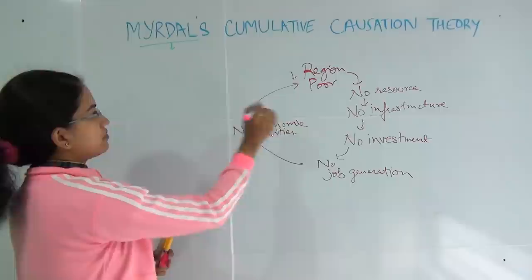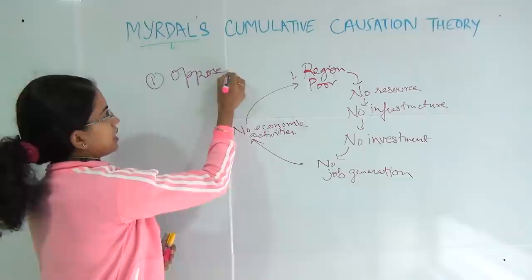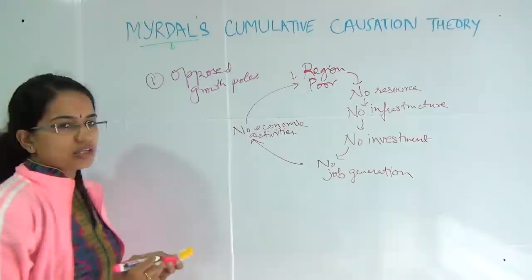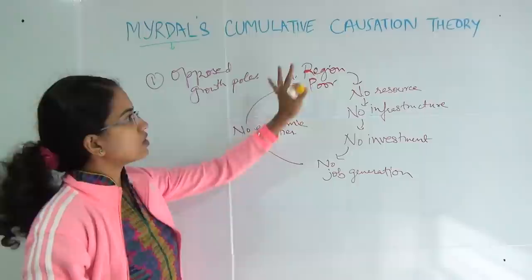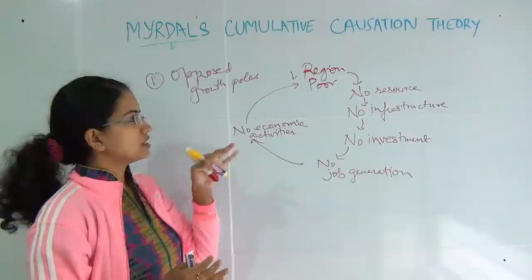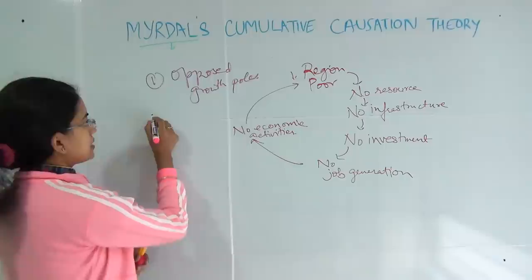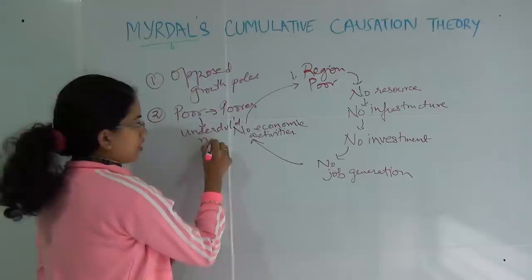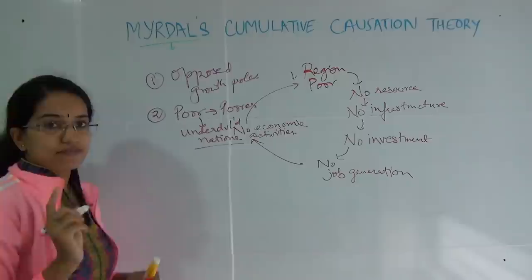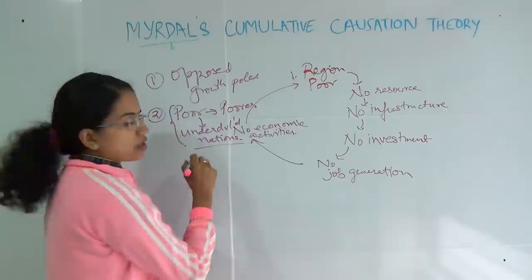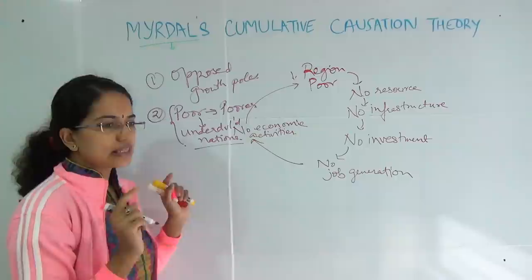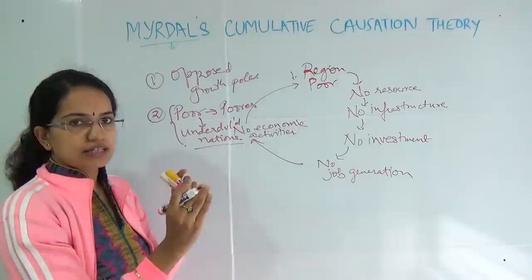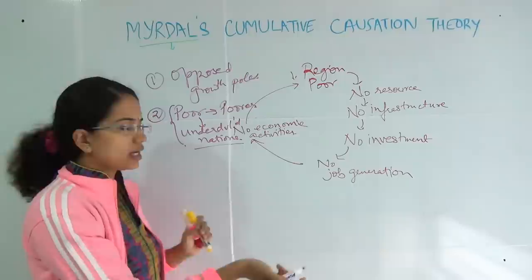Myrdal opposed the growth pole concept. His theory focused on two things — the backwash effect and the spread effect — and based on that, he gave the concept of cumulative causation: that the region which is rich gets more and more rich, and the region which is poor gets more and more poor. He also said the poor region tends to go poorer at a much faster pace in an underdeveloped or developing nation as compared to a developed nation. His main aim was to focus on the underdeveloped economies, and he said those regions which are underdeveloped — if there is a poor section or a section which is not flourishing — it would go further down as compared to the other regions.